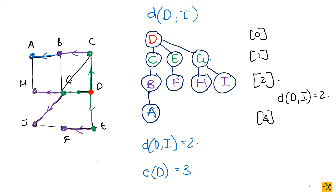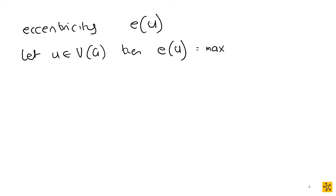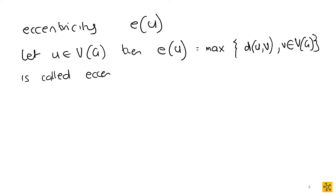Let's write down the formal definition of eccentricity before we move on. The eccentricity E(U), where U is an element of the vertex set of graph G, is equal to the maximum of the shortest path distances D(U,V), where V is also an element of the vertex set. So it's the longest shortest path, and you can find it by doing Moore's breadth-first search and reading off the final level.